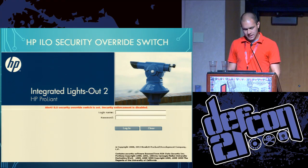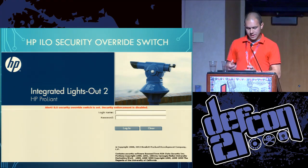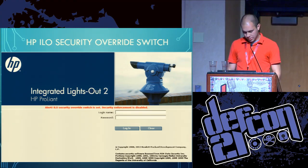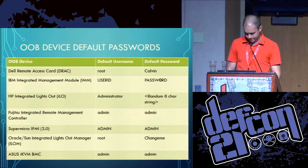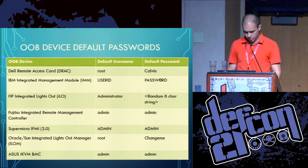Here's an example of HP iLO. They have an override switch that is physically on the machine, and if it's enabled you don't have to authenticate at all — which is great if you're targeting that machine. Here's a list of common usernames; iLO is the only one that is actually updated — all the rest have weak defaults.